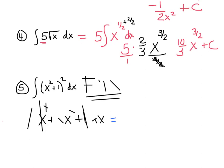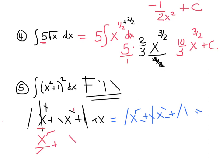If you want, you can split each term up: the integral of x to the 4th, plus 2 times the integral of x squared, plus the integral of 1 dx. But you can just integrate each one as you go. So I get x to the 5th over 5, plus x cubed over 3 times 2, plus x, plus c.